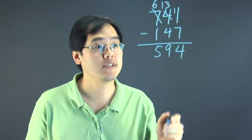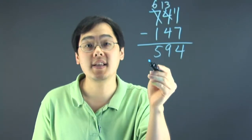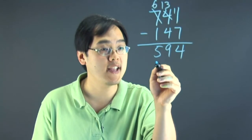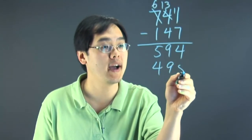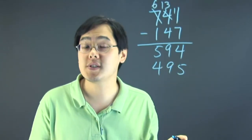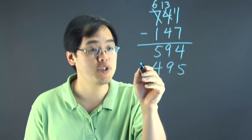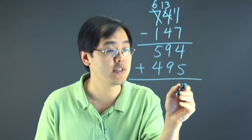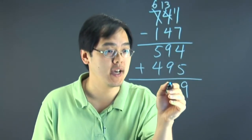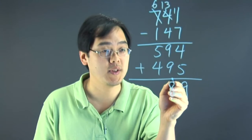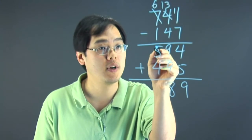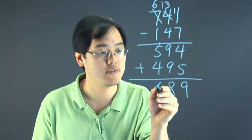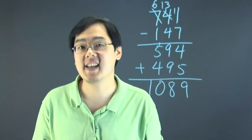Now what you're going to do with that is reverse these digits as well. So 594 reversed gives you 495. Now you're going to add them. 4 plus 5 is going to give you 9. 9 plus 9 is going to give you 18, so write the 8, carry the 1. 4 plus 5 is 9, add the 1 gives you 10. So 1089.